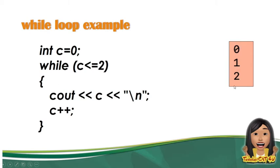So, 0, 1, and 2 — yan yung sample output. Ano ba yung first value? This is 0. Ibig sabihin, initialize natin sa 0.